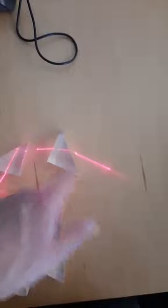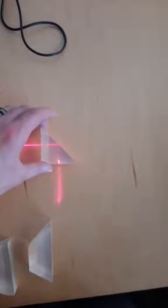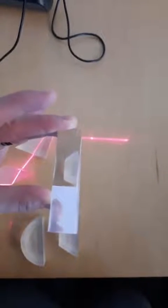But at this special angle, all of the light is reflected instead of going through the prism, even though this isn't a mirror. There's not a reflective surface, it's just a piece of glass.